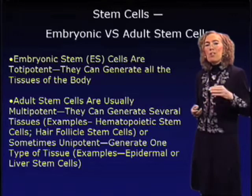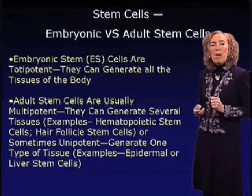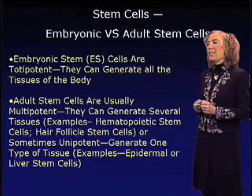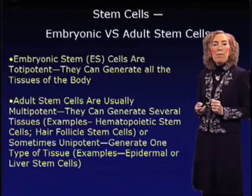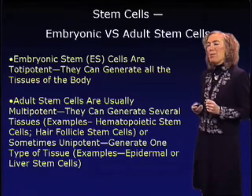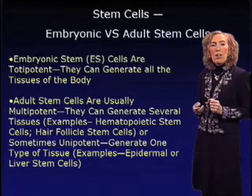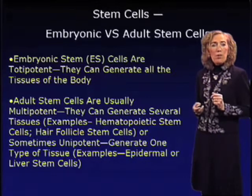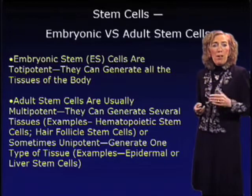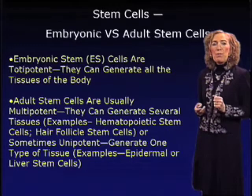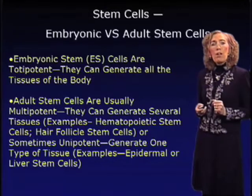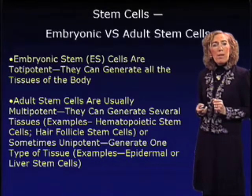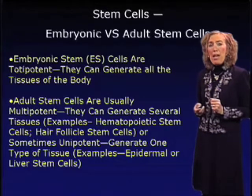There are also stem cells of the body called unipotent stem cells. These cells have the capacity to generate only one type of tissue. An example would be the epidermal stem cell, which as far as we know is only capable of generating epidermis, or liver stem cells, which as far as we know are only capable of generating hepatocytes.